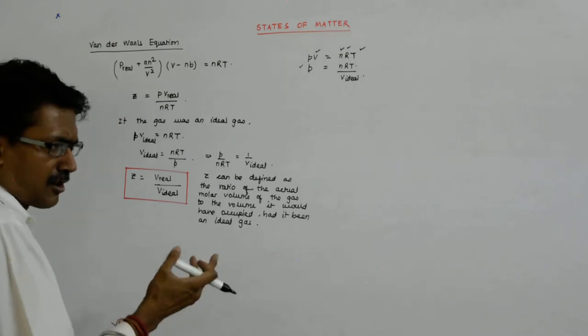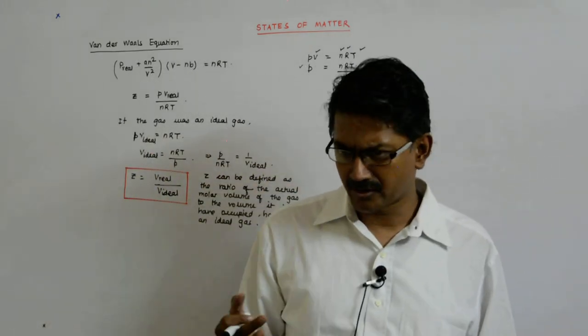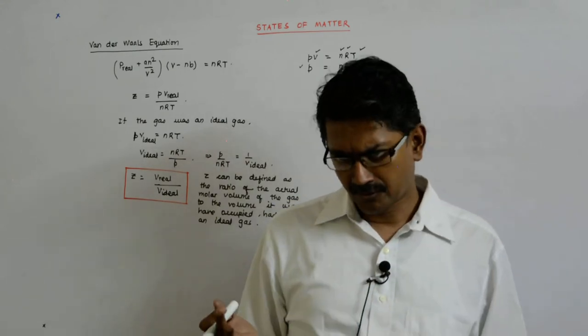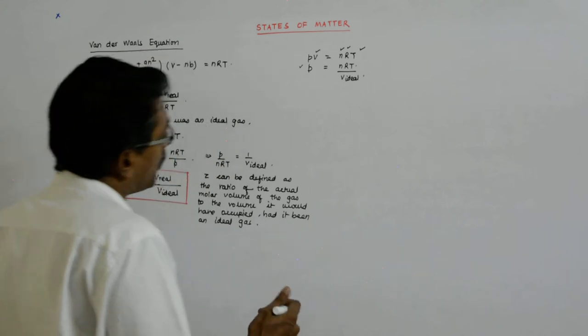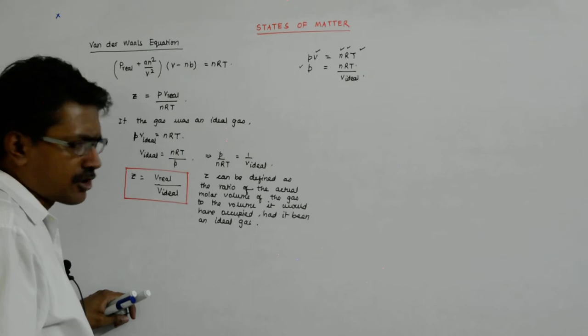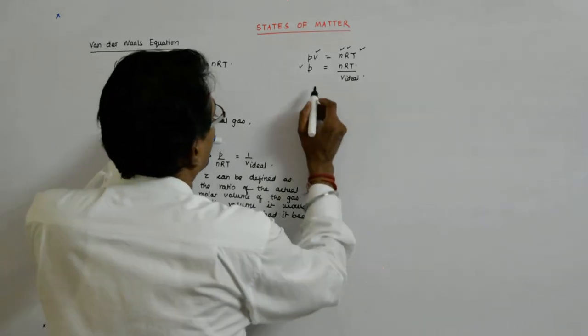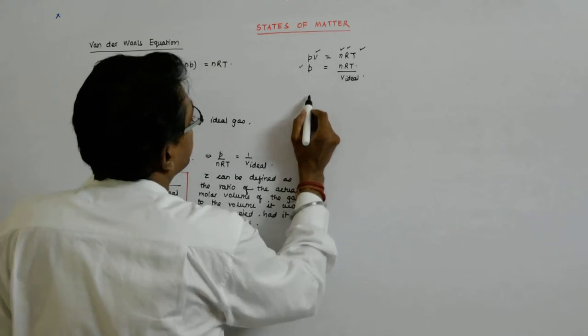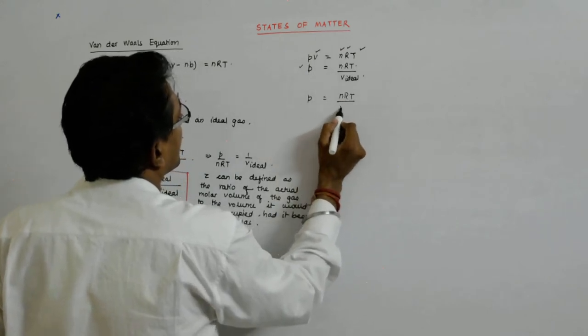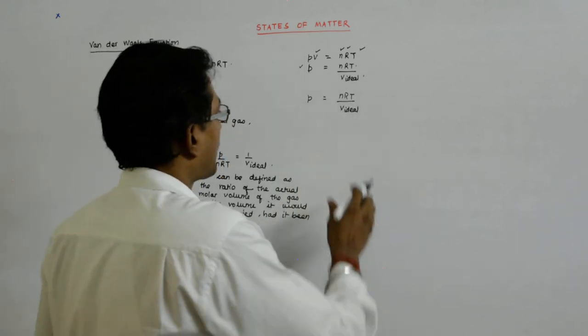You ensure the conditions of, say, maybe low temperature or high pressure, so that even if it's deviating from the ideal behavior, you ensure the same P. You can ensure the same P for a real gas, right? Try to understand.